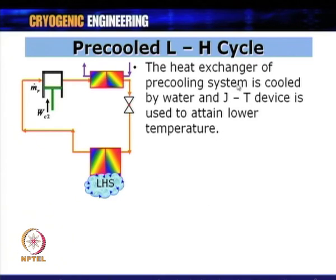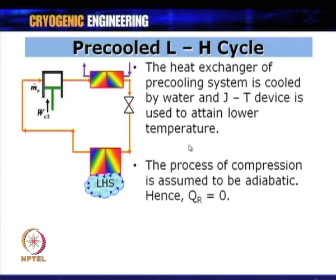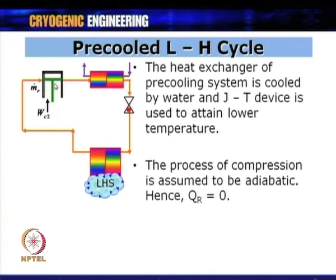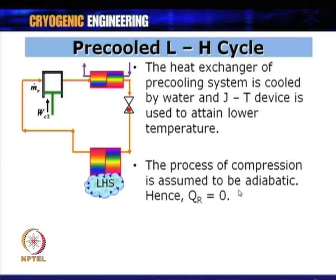In the pre-cooling circuit, the compressor is followed by a heat exchanger, a JT expansion valve, and the pre-cooling heat exchanger. The compression process is assumed to be adiabatic, so QR equals zero, whereas in the main Linde-Hampson cycle, compression is assumed to be nearly isothermal.